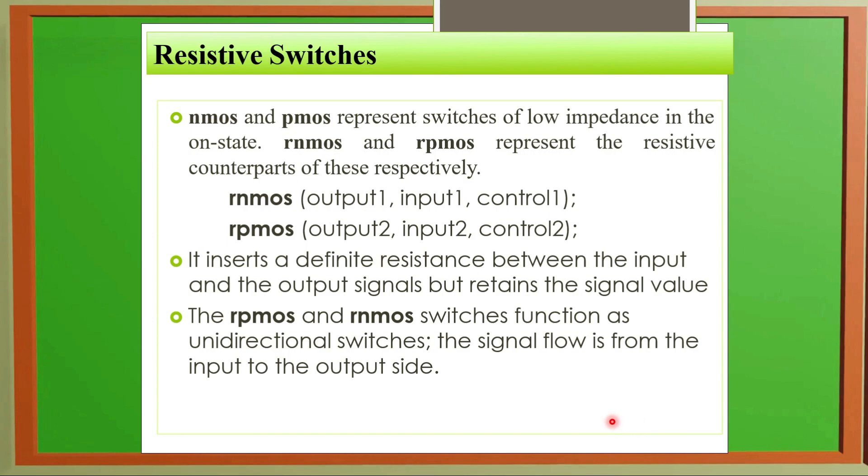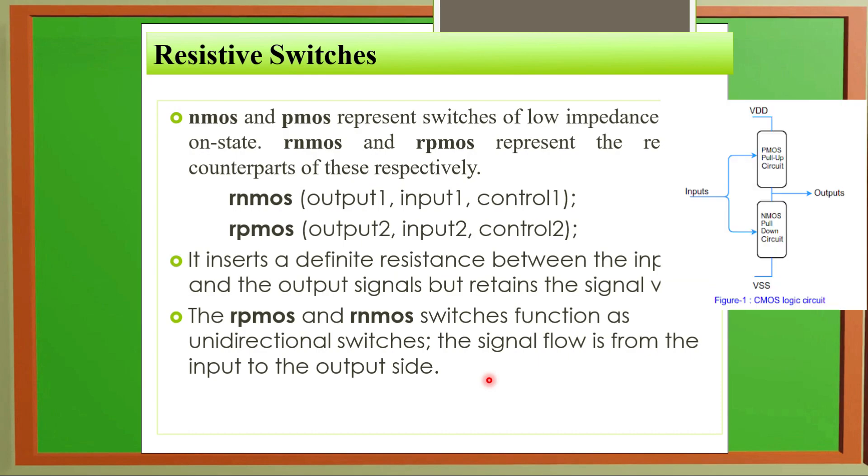Then we have resistive switches. NMOS and PMOS can be represented with their resistive counterparts. The syntax is R NMOS, where R stands for resistive. R NMOS output one, input one, control one. And R PMOS output two, input two, control two. In programming we will see how to use them in detail, but we have to remember the syntax closes with semicolon. It inserts a definite resistance between input and output signal but retains the signal value. R PMOS and R NMOS switches function as unidirectional switches. Signal flow is from input to output side.